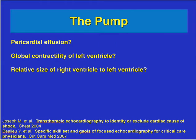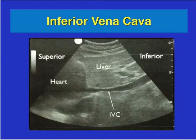We have things we're going to evaluate with the pump: pericardial effusion, global contractility of the left ventricle, or relative size of the right and left ventricle. But in this specific case, what we're going to be looking at is the flow of blood to the pump — essentially, the inferior vena cava.